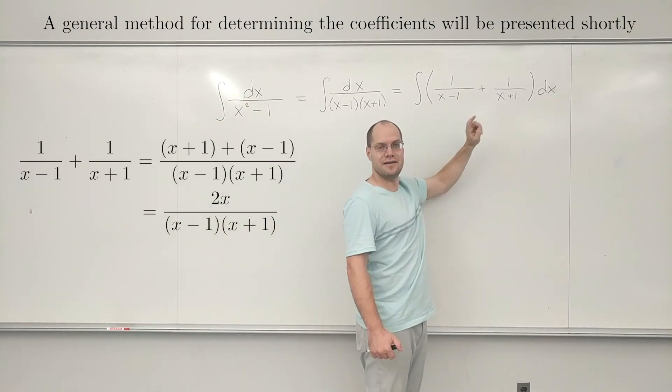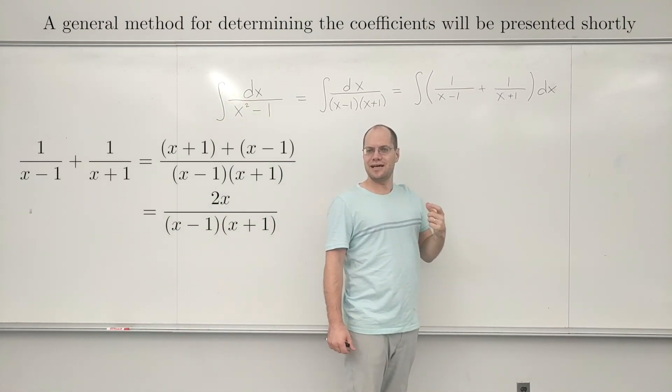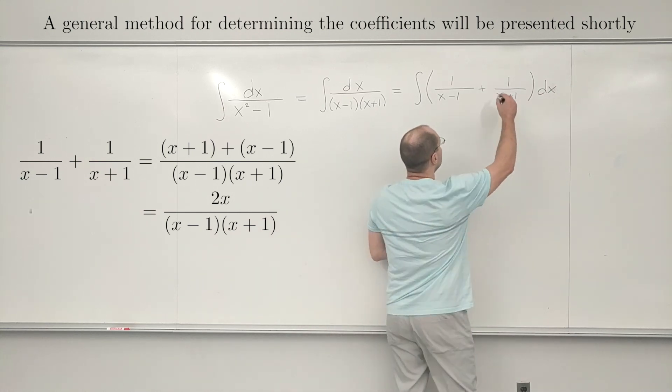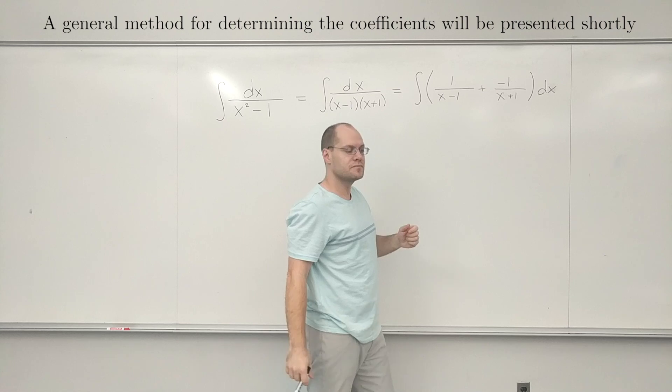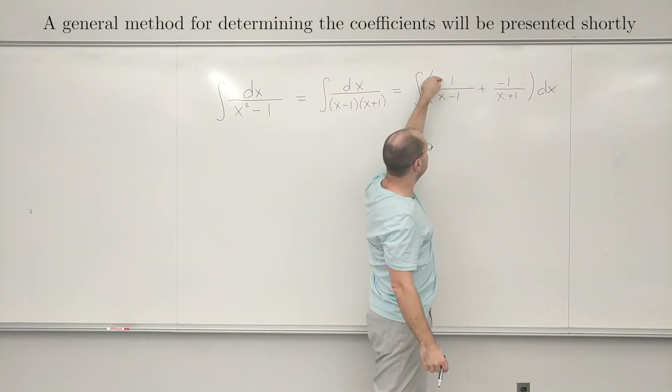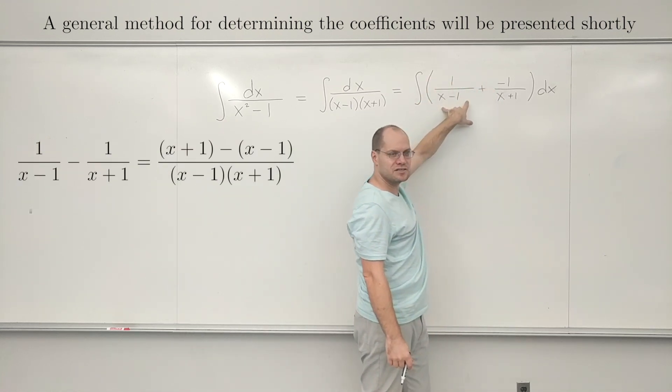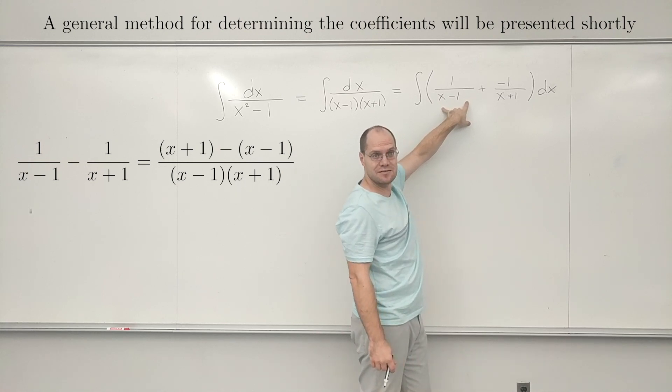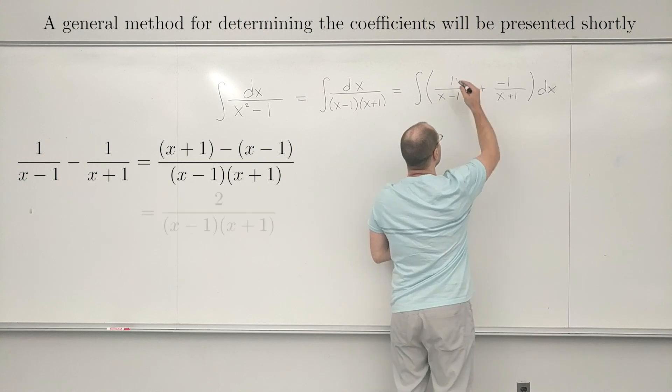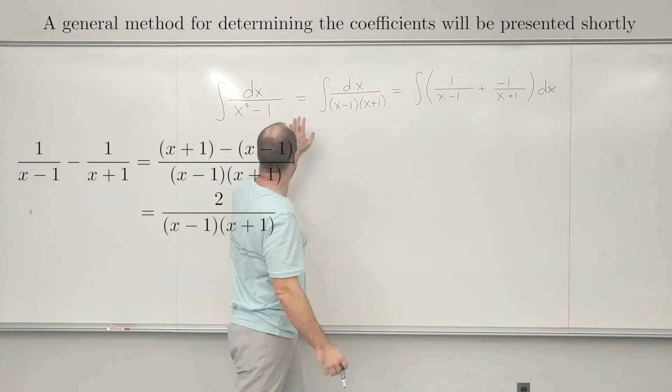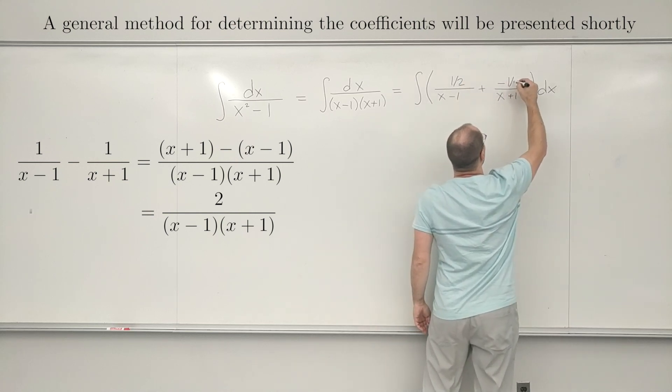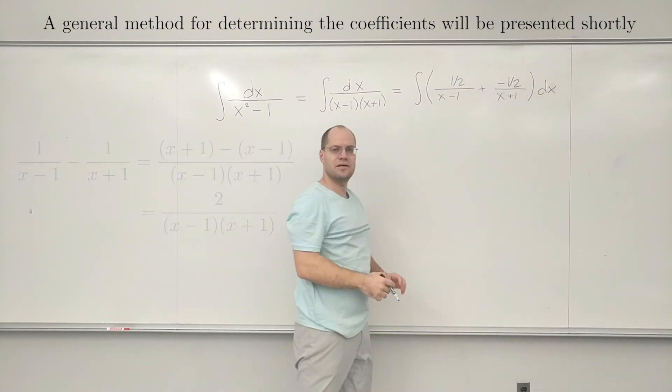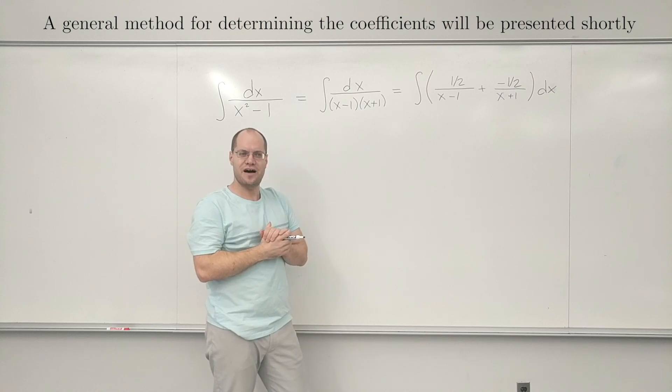So that doesn't work. That's not what we want to have on top. We want to have 1 on top. So the two x's need to cancel each other. So I'll just subtract 1. So now we have x plus 1 minus x minus 1. And the two x's now cancel. And so we have 2 instead of 1. We want to have 1. So we actually need 1 half of the first one and 1 half of the second one. Did you follow that?